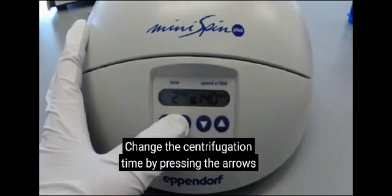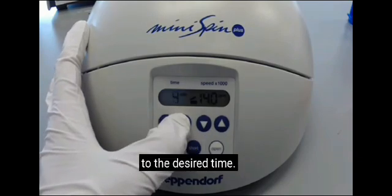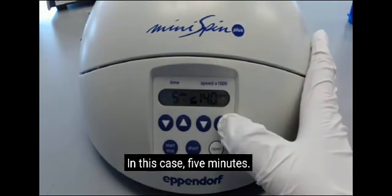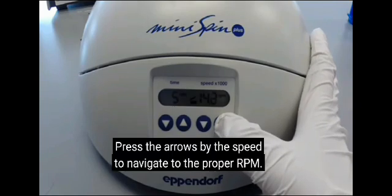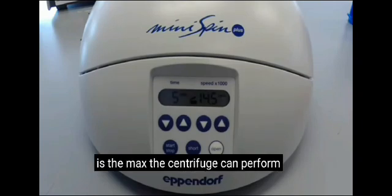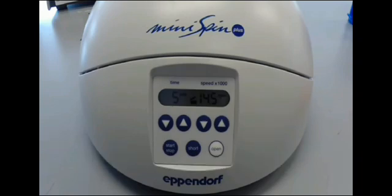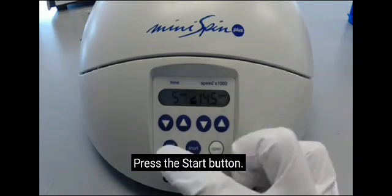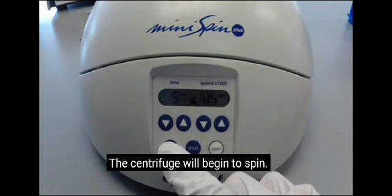Change the centrifugation time by pressing the arrows to the desired time. In this case, 5 minutes. Press the arrows by the speed to navigate to the proper RPM. In this case, 14,500 RPM is the maximum the centrifuge can perform and is close enough to our desired speed. Press the start button. The centrifuge will begin to spin.